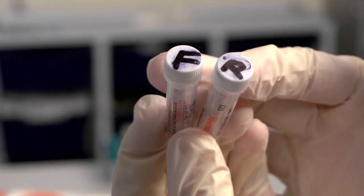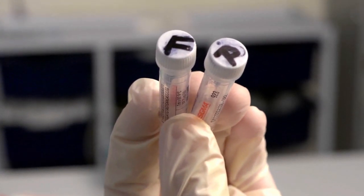First, label the tubes forward and reverse so you know which is which, and then put them in the centrifuge at full speed for 30 seconds.